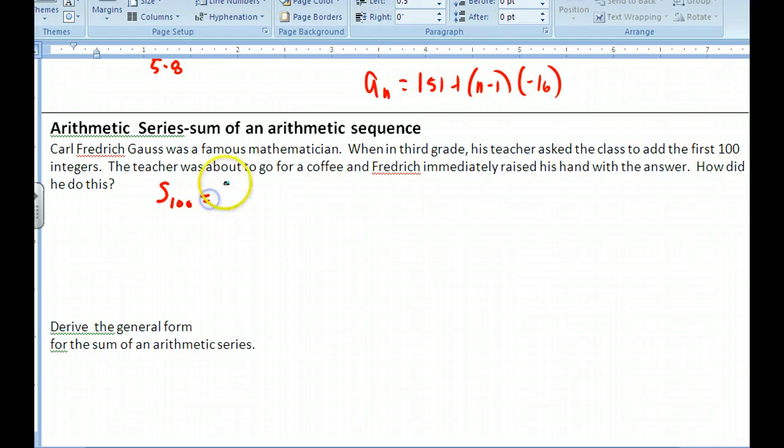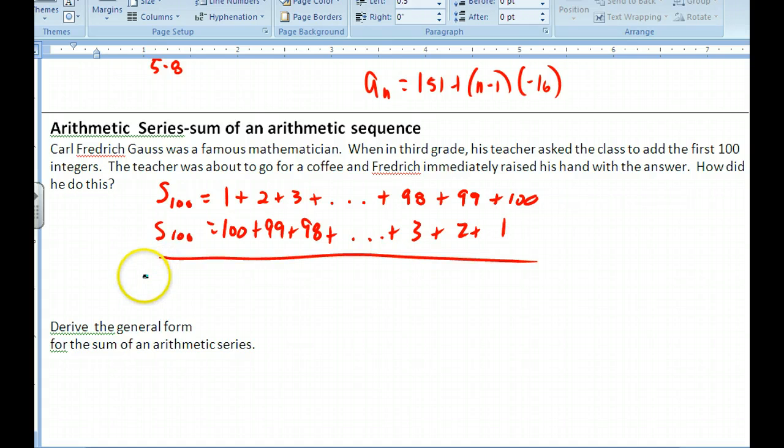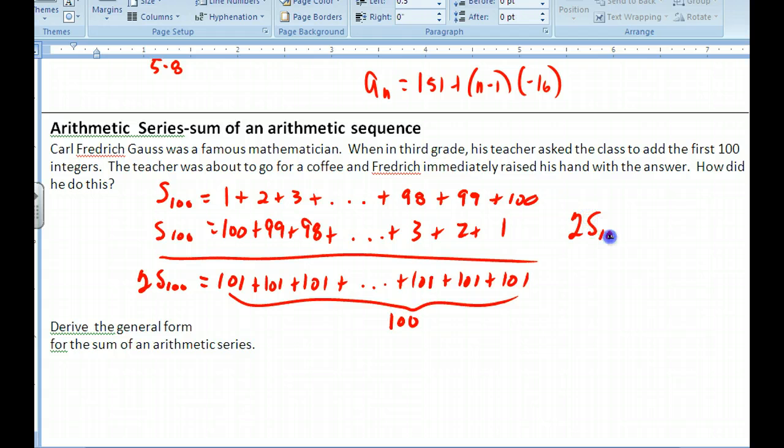And he could not believe that he figured this out so quickly. And so what Gauss did was this. He said, if I have the first 100 integers, 1 plus 2 plus 3 plus dot, dot, dot, plus 98 plus 99 plus 100. If you list all those out, and he did it again, except for in reverse order, plus 3 plus 2 plus 1, if you take these two sequences and add them up, you get 2s sub 100 is equal to, this is 101, this is 101, this is 101, and so on, all the same. How many times do we have 101? Well, if you look at this in total, we have 100 of these. And so we can say that 2s sub 100 is equal to 101 times 100 terms, and then we're going to divide by 2 to get rid of this one. And so you get 5050. So Gauss got that one very quickly.